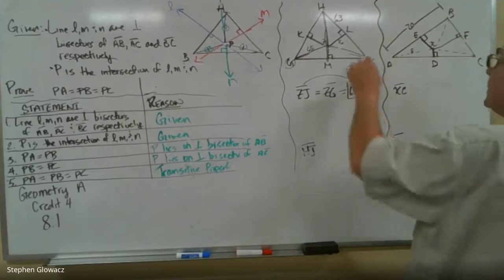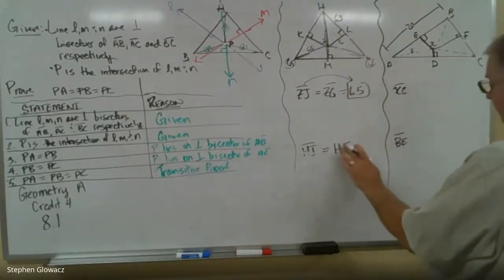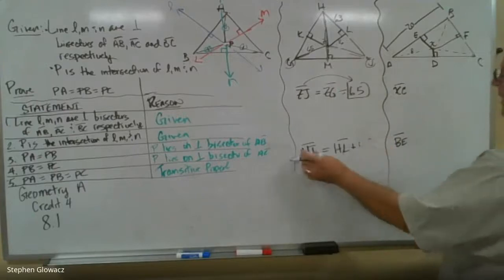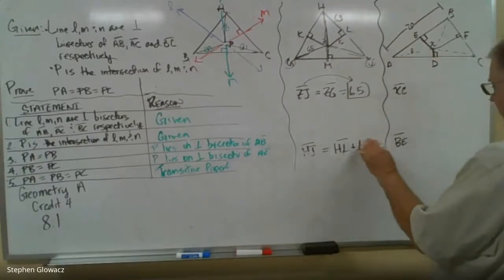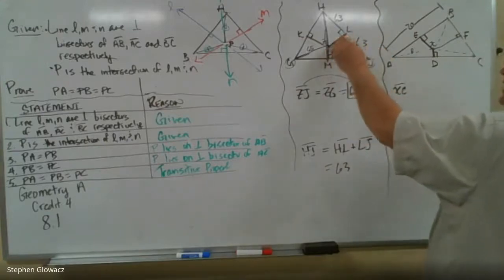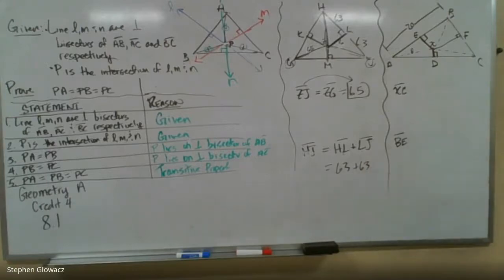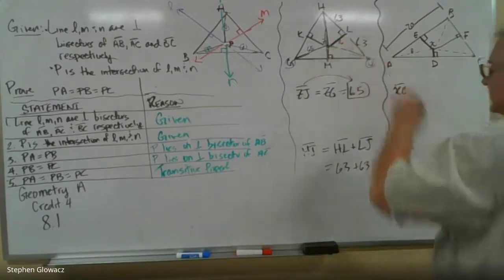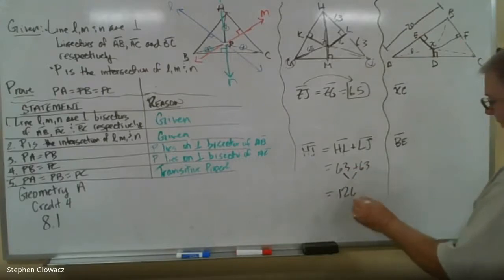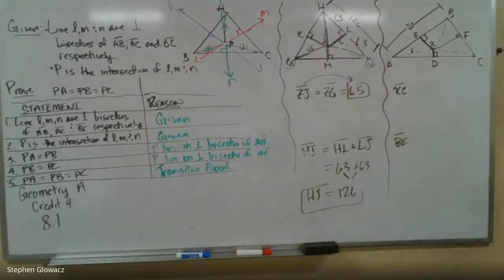Now they want us to find the length of HJ. So HJ is made up of these two segments here, HL and LJ. So HJ, the whole thing, is HL plus LJ. We know what HL is, that's 63. LJ is also 63 because this is a perpendicular bisector. These two segments are congruent, so they're both 63. They told us that these are the perpendicular bisectors. If they're both 63, we just add those up. 63 plus 63 is 126. So the length of HJ, the whole thing from H to J, is 126.